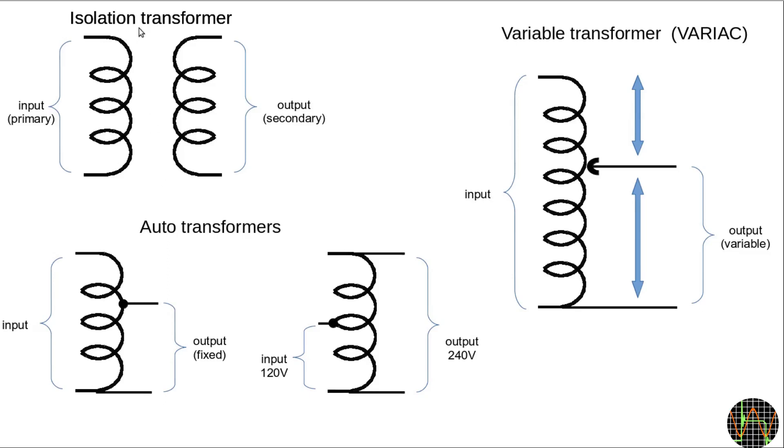If, for example, the primary is connected to 230V mains and the secondary delivers say 12V, it is safe to touch the secondary on an isolation transformer because it is isolated from mains.